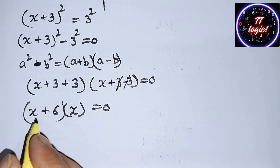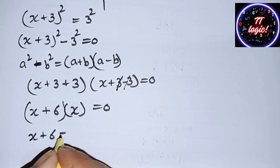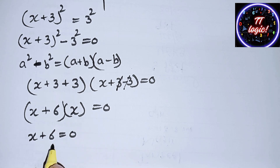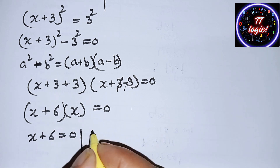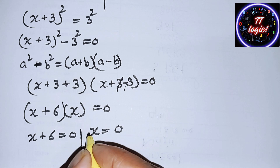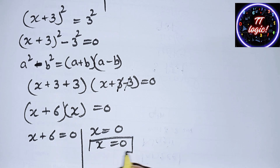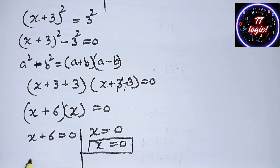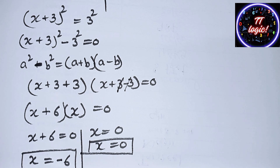So we have x(x + 6) = 0, giving us two equations: x + 6 = 0 as the first equation, and x = 0 as the second equation. The first value of x is −6 and the second value of x is 0.